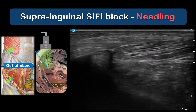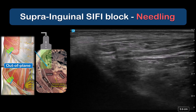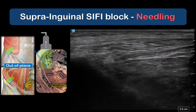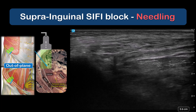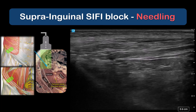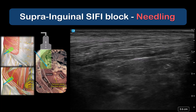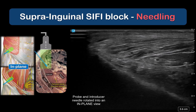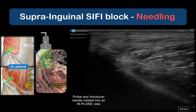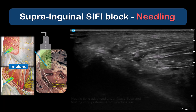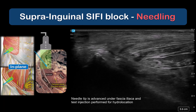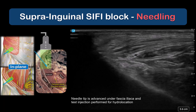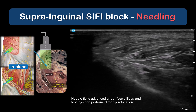Advancement through the musculofascial layers is guided by tactile pops and visual imaging cues. Once the needle tip has reached fascia iliaca, the probe and needle are repositioned to achieve an in-plane view. Placement of the needle tip under fascia iliaca is confirmed by hydrolocation with half-mil test injections of local anesthetic.